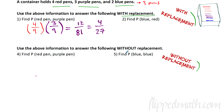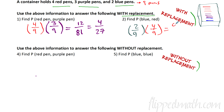Next: find the probability of pulling a blue pen and then a red pen. Blue is 2 out of 9, red is 4 out of 9. With replacement, we're putting the pens back in after each draw. So 2/9 times 4/9 equals 8 out of 81. That one can't be reduced, so we're good. These are two examples of finding compound probabilities with replacement.